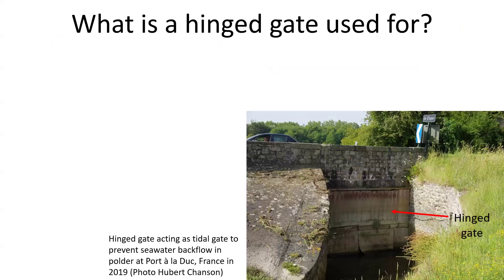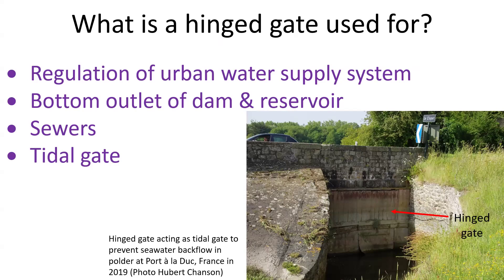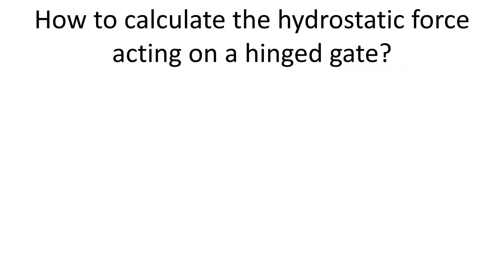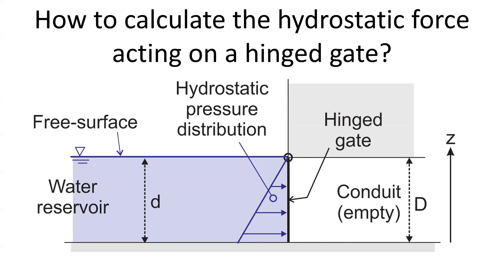The hinge gate can be used in urban water supply, a dam and reservoir, in sewers, or as a tidal gate — for example, a hinged gate acting as a tidal gate to prevent high tidal water from entering into a farming polder.